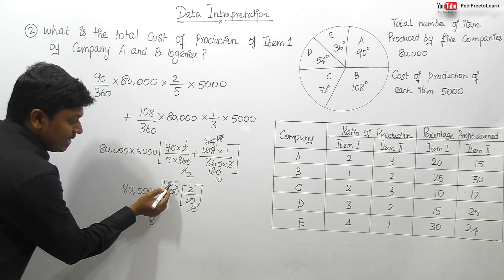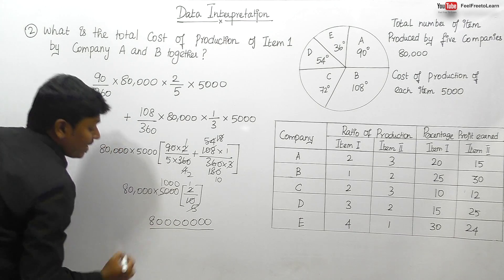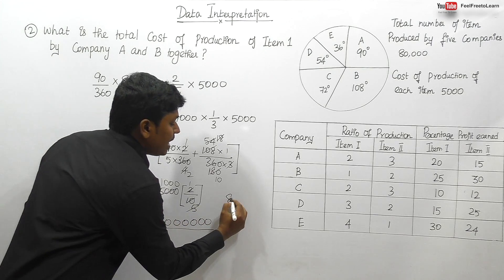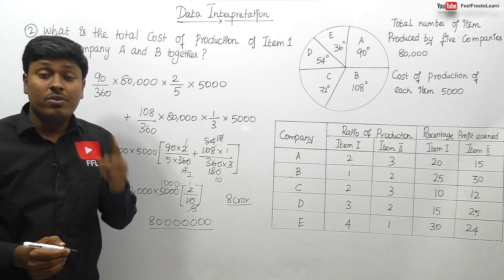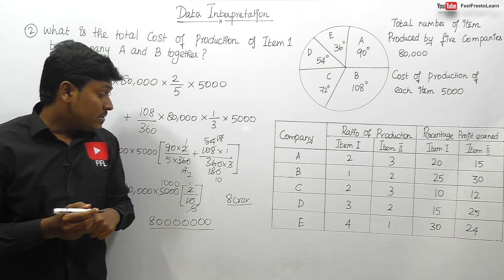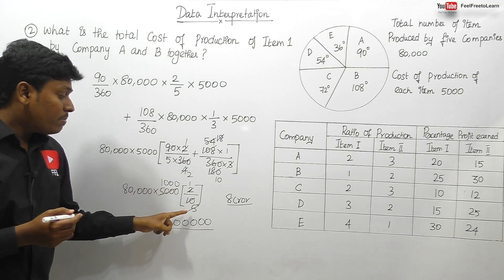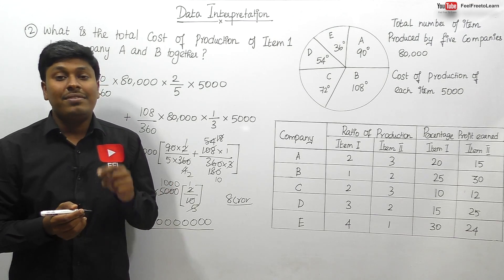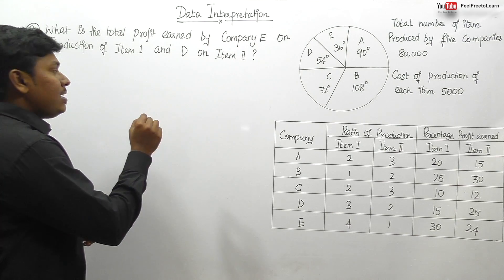80,000 × 1,000 = 8,00,00,000 — that is 8 crore. So the total cost of production of item number 1 for company A and company B together is 8 crore. The key was to take 80,000 and 5,000 as common factors so they cancel easily.